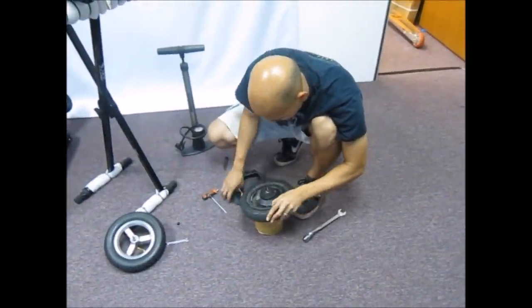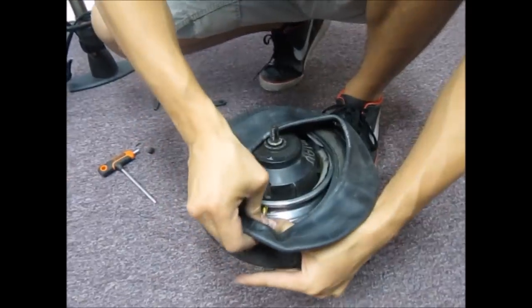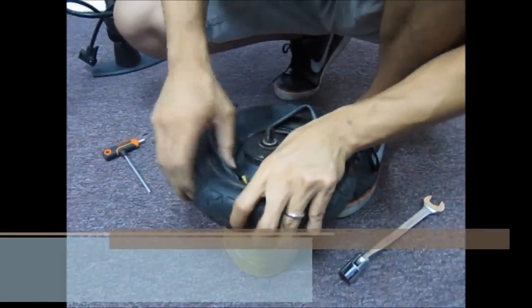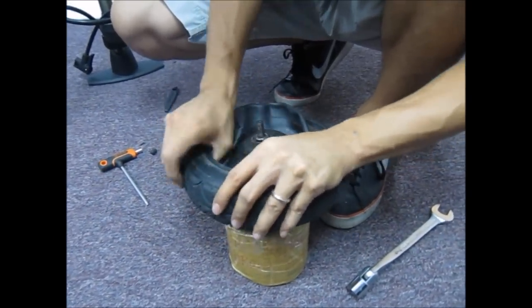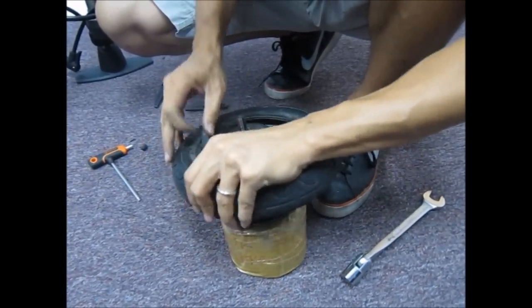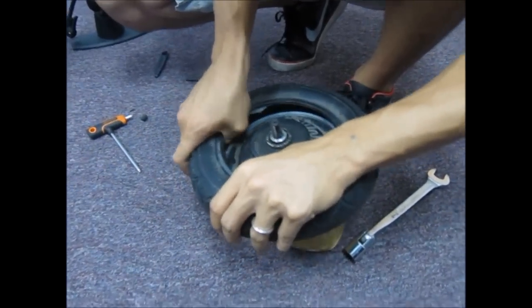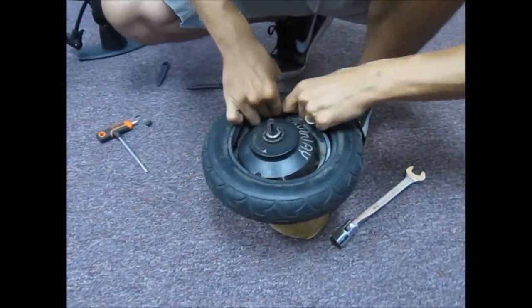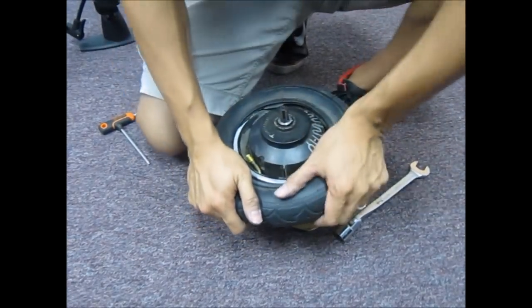Now how are you gonna put the new tube in? Look for the valve hole in the rim, stick the valve hole through. Align the tube flat against the inside of the tire. Make sure everything is tucked in. Make sure there are no knots. Make sure it's fully flushed against the interior wall of the tire. Then easy, the next step, and this part you can entirely use your hands for it.